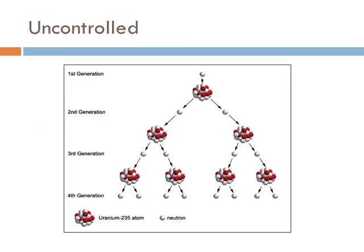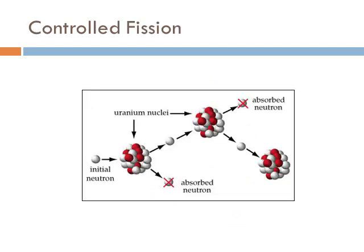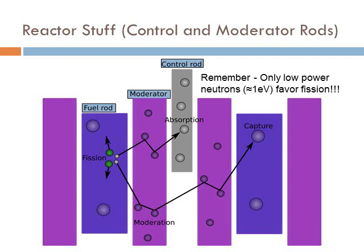In uncontrolled fission, for every split you get more than one additional split, and it gets bigger and bigger. In controlled fission, you absorb the extra neutrons to get rid of them so they don't split other atoms — because you want only one reaction for every split. The way we control it is by having a method of absorbing those extra neutrons.